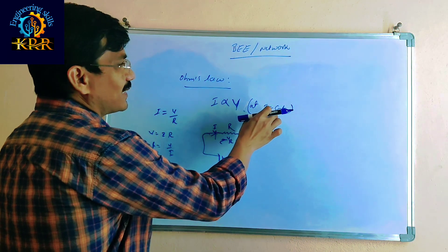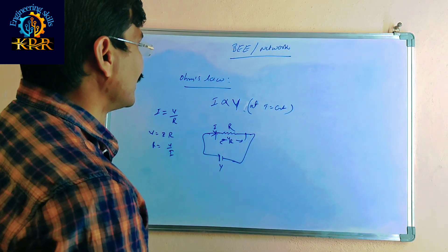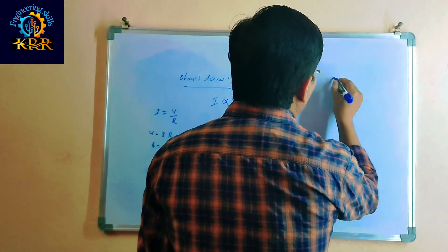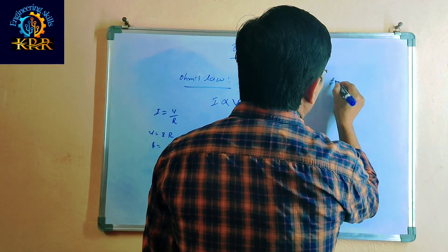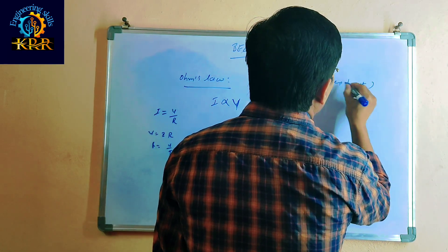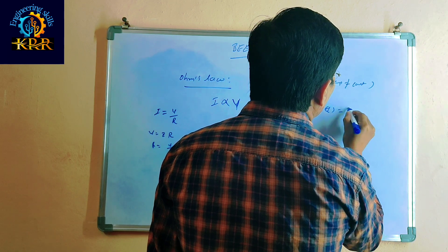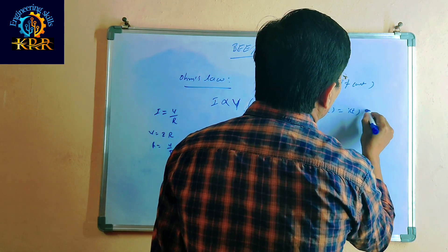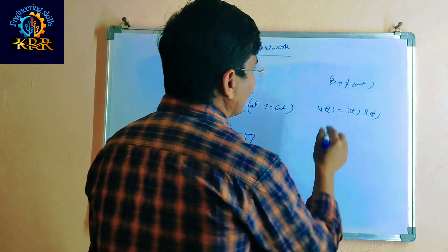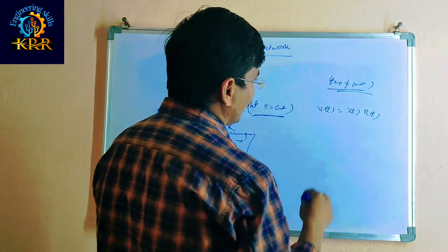This concept applies at constant temperature. Temperature should be constant. If temperature is not constant, then the relationship changes — voltage becomes a function of temperature, V(T) is equal to I(T) into R(T). So here the temperature should be constant.